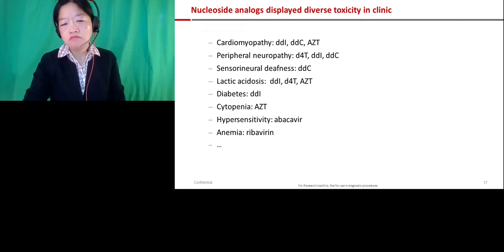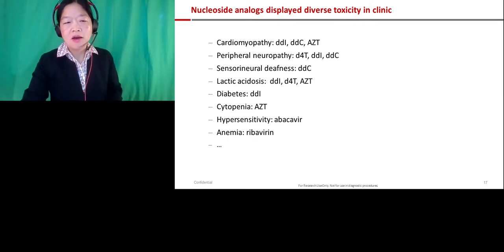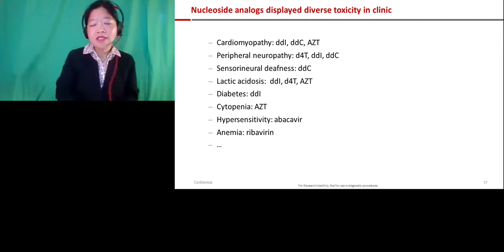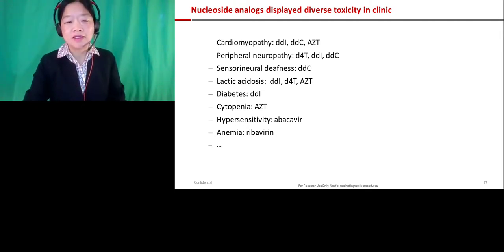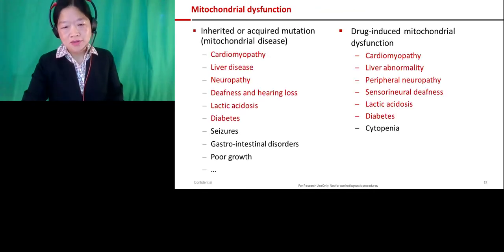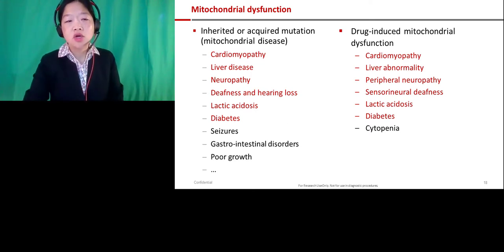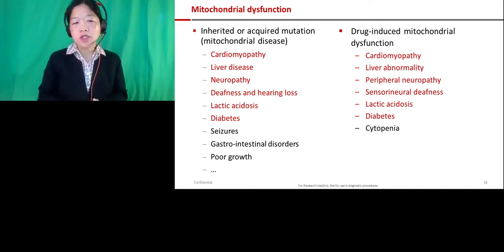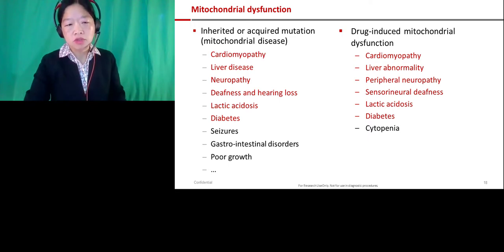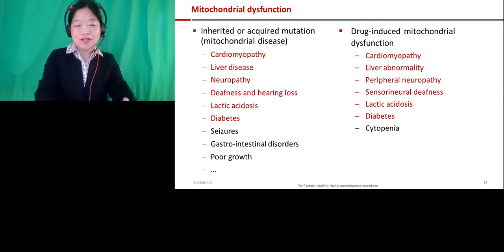Looking at this diverse range of toxicities led us to revisit early HIV antivirals. Even though we already knew mitochondria was the target, the clinical presentations were remarkably varied: heart issues, neuropathy, deafness, lactic acidosis. Imagine being in the 1980s and early 1990s looking at this toxicity and asking what is going on. Someone made a connection — comparing the phenomena seen in nucleoside analogue discovery to inherited mitochondrial diseases. When you have a mitochondrial mutation or disease, you see very diverse toxicity, and the patterns appear connected.